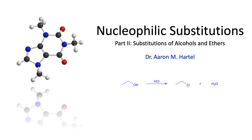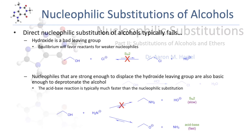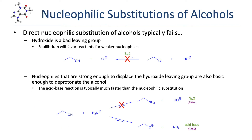In this lesson, we're going to continue our look at nucleophilic substitutions, focusing on the reactions of alcohols and ethers. Direct nucleophilic substitution on alcohols typically fails, and that's because hydroxide, the leaving group of an alcohol, is such a bad leaving group.